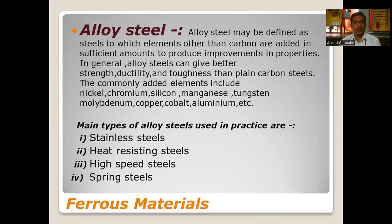Alloy steel may be defined as steel to which elements other than carbon are added in sufficient amounts to produce improvement in properties. In general, alloy steels can be given better strength, ductility, and toughness than plain carbon steels. Commonly used alloying elements include nickel, chromium, silicon, manganese, tungsten, molybdenum, copper, cobalt, aluminum, etc.